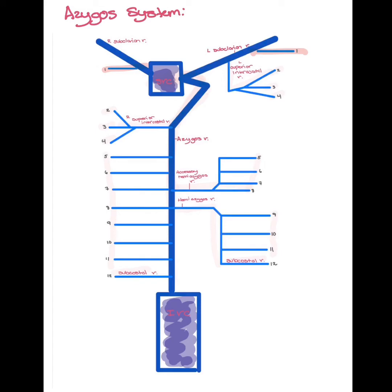On the right side, intercostal veins 2, 3, and 4 drain into the superior intercostal vein, into the azygous vein, and into the SVC. Intercostal veins 5 through 11 and the subcostal vein drain directly into the azygous vein and into the SVC.